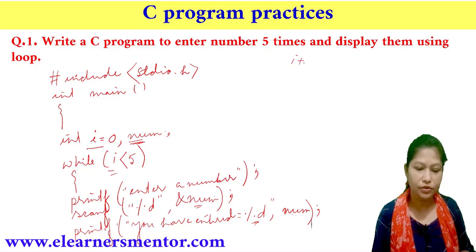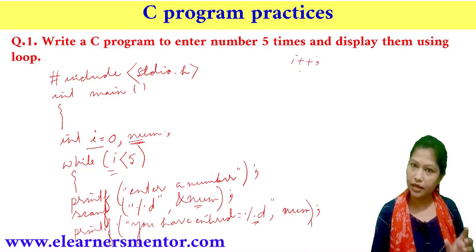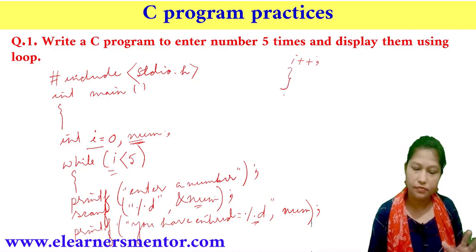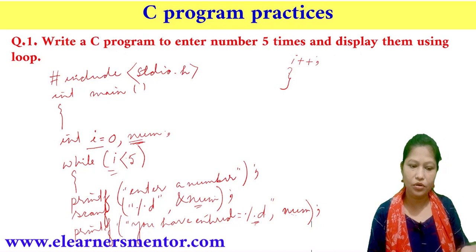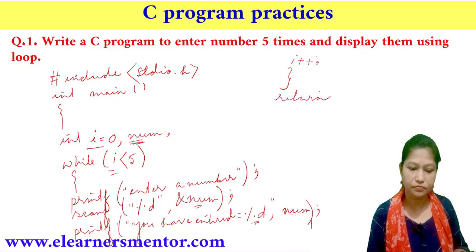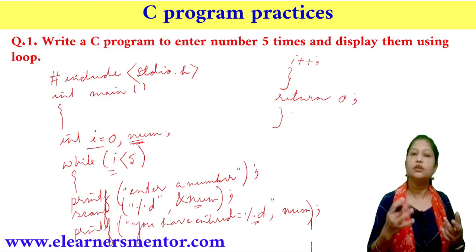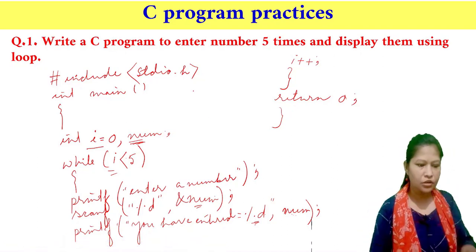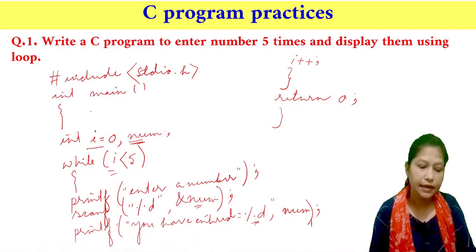After displaying, we increment i with i++. Then we close the while loop. At the end of the main function, we write return 0 and close the curly bracket.